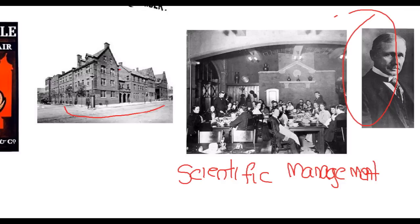In many ways, modern politics and social change in the United States are really the result of the reforms progressives put in place during the first couple of decades of the 20th century — leading to the modern world that Americans would recognize at the beginning of the 21st century.